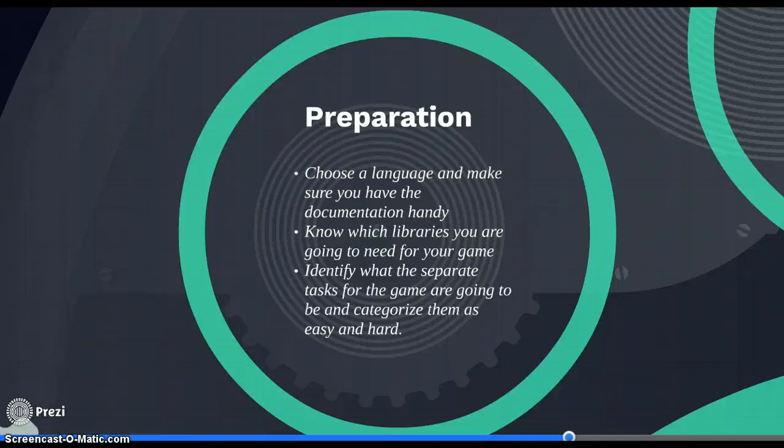If you have some background in programming, you probably already know which ones you want. Identify what the separate tasks for the game are going to be, and categorize them as easy or hard. So let's take, for example, the game Pong — basically two paddles that hit a ball and knock them back and forth, essentially like an air hockey or ping pong game.